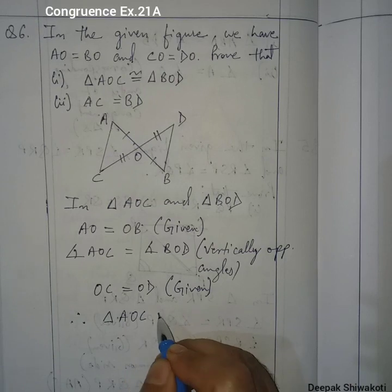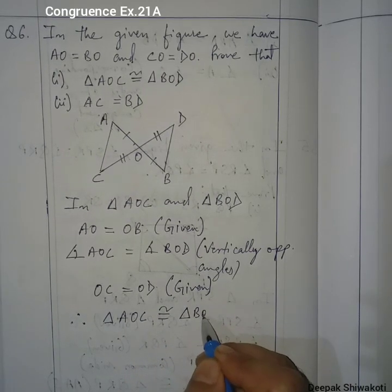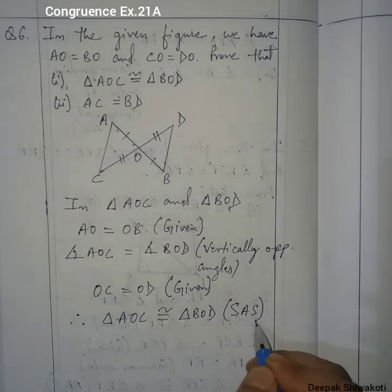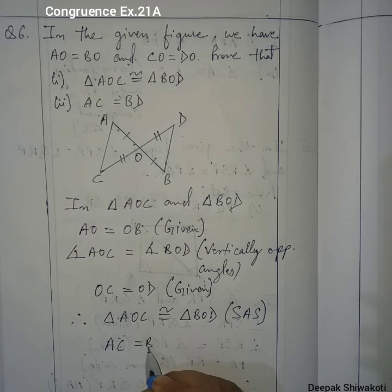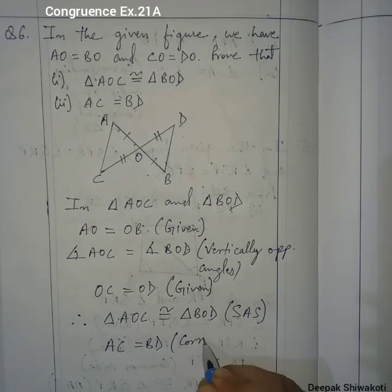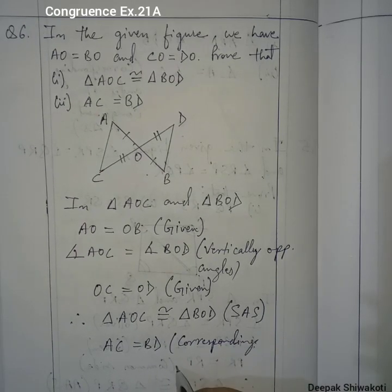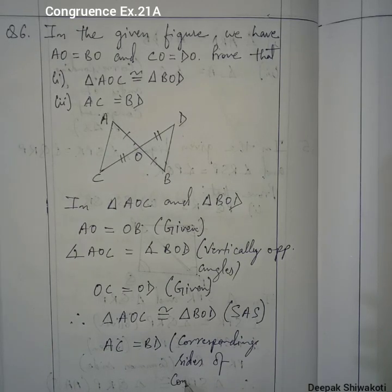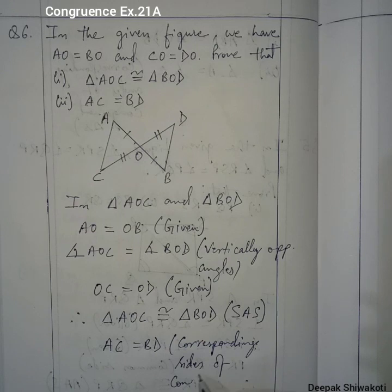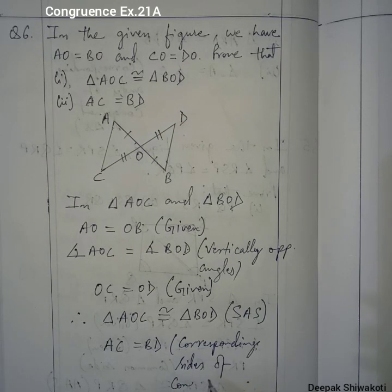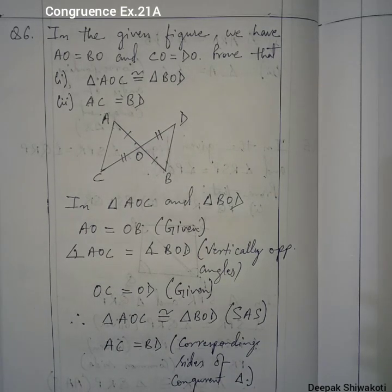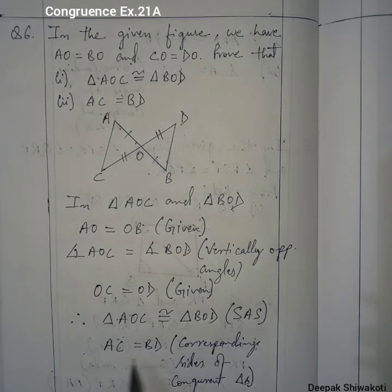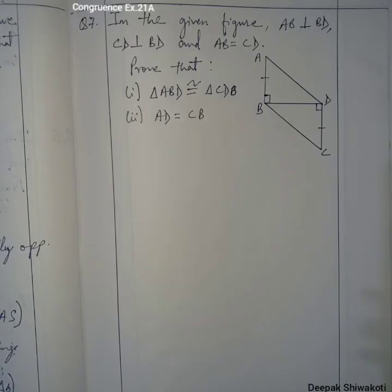By the Side-Angle-Side condition, triangle AOC is congruent to triangle BOD. This is number one. Number two: AC is equals to BD. They are equal because they are corresponding sides of congruent triangles. Corresponding sides of congruent triangles are always equal.